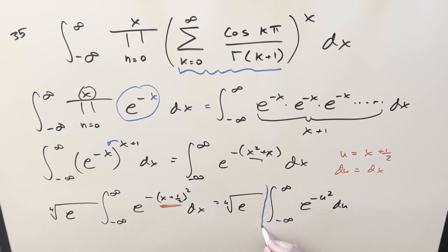So putting it together for my final solution on this, we just get the fourth root of e times square root of pi, and that's it.